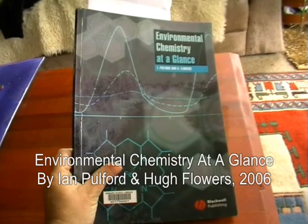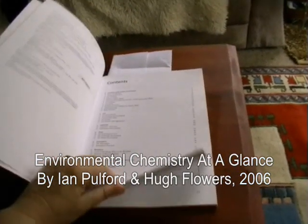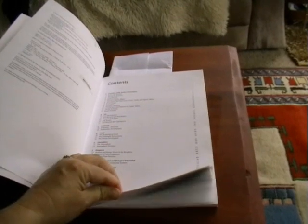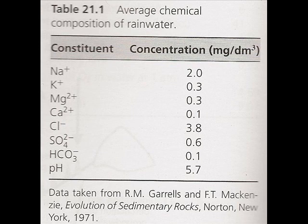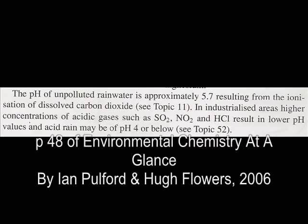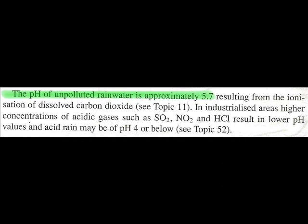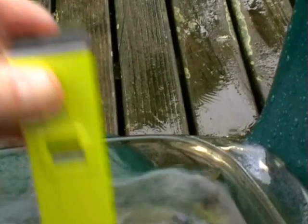I found the book 'Environmental Chemistry at Advance' by Ian Pulford and Hugh Flowers at the local library. Published in 2006, it includes a table on page 48 showing the composition of rainwater from 1971 data — with no mention of aluminium, barium, or strontium. It shows the average chemical composition of rainwater and notes on page 48 that the pH of unpolluted rainwater is approximately 5.7, resulting from the ionisation of dissolved carbon dioxide. There is quite a big difference between a pH of 5.7 and the 6.8 I measured over the past two days.